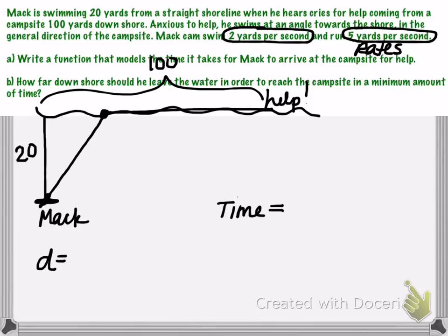So we know that the relationship between distance, rate, and time is the equation distance is equal to rate times time. And if we ultimately want to write a time equation, then if we solve for time, we would divide both sides of this equation by the rate. And we'll have that the time can be found by taking the distance divided by the rate. So that's going to be important since we're ultimately looking for a function that models time.